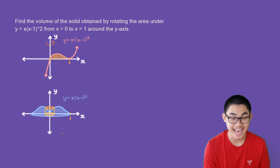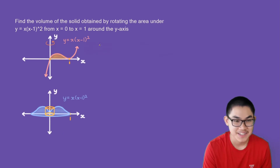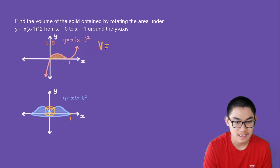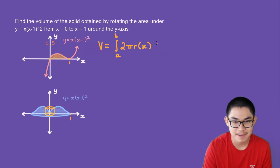Now in this case, it's on the x-axis. So the volume formula will be V is equal to the integral from a to b of 2 times pi times the radius times the height, which is f(x), dx.